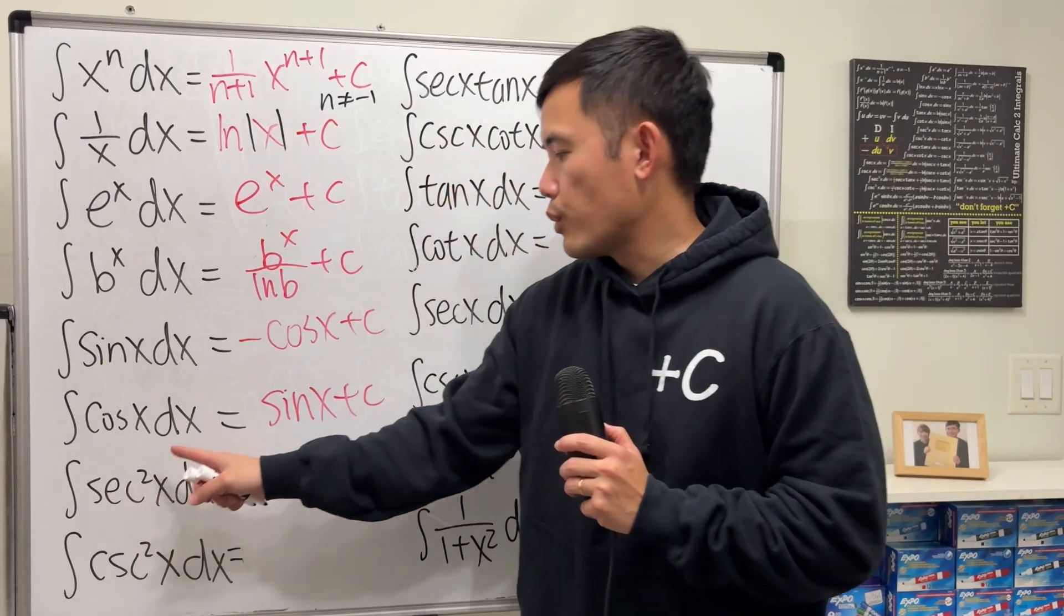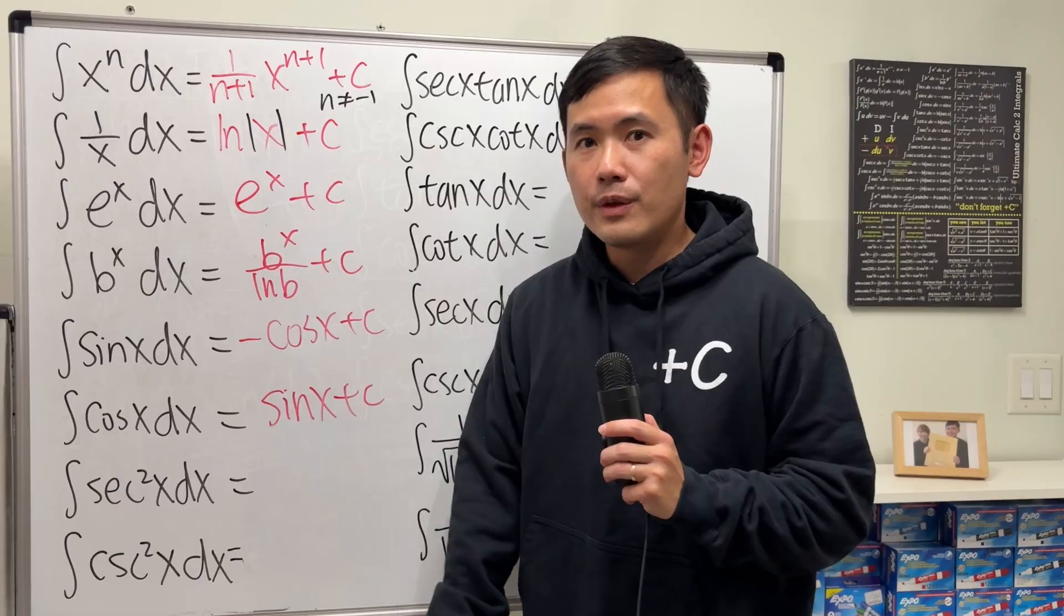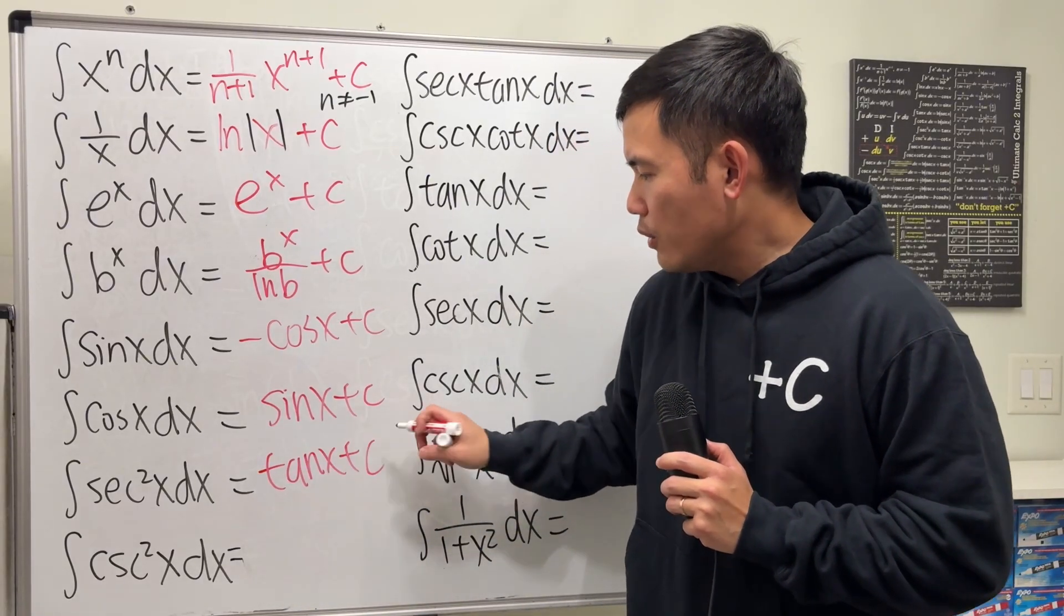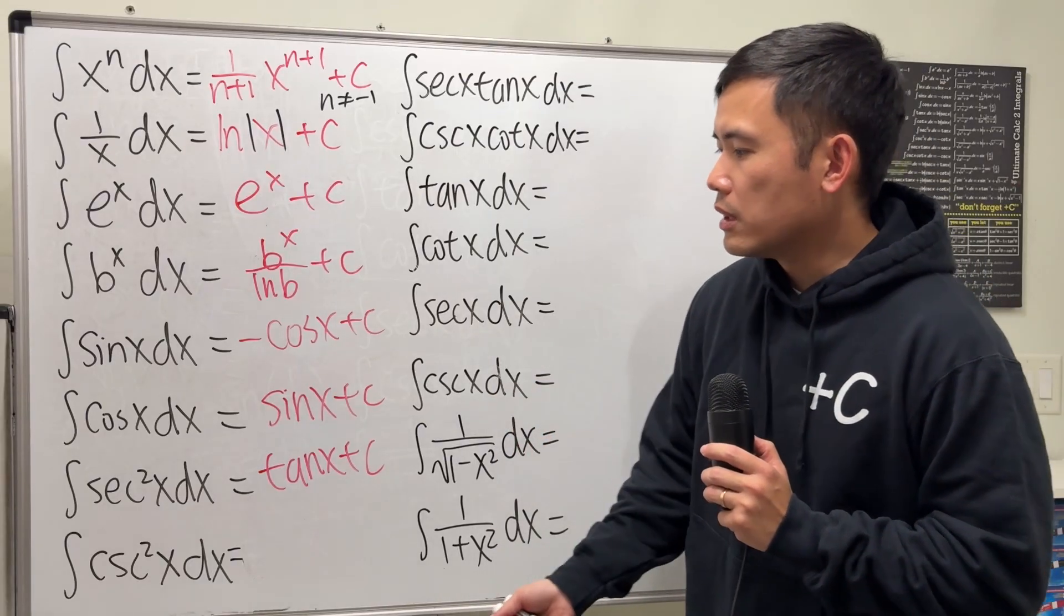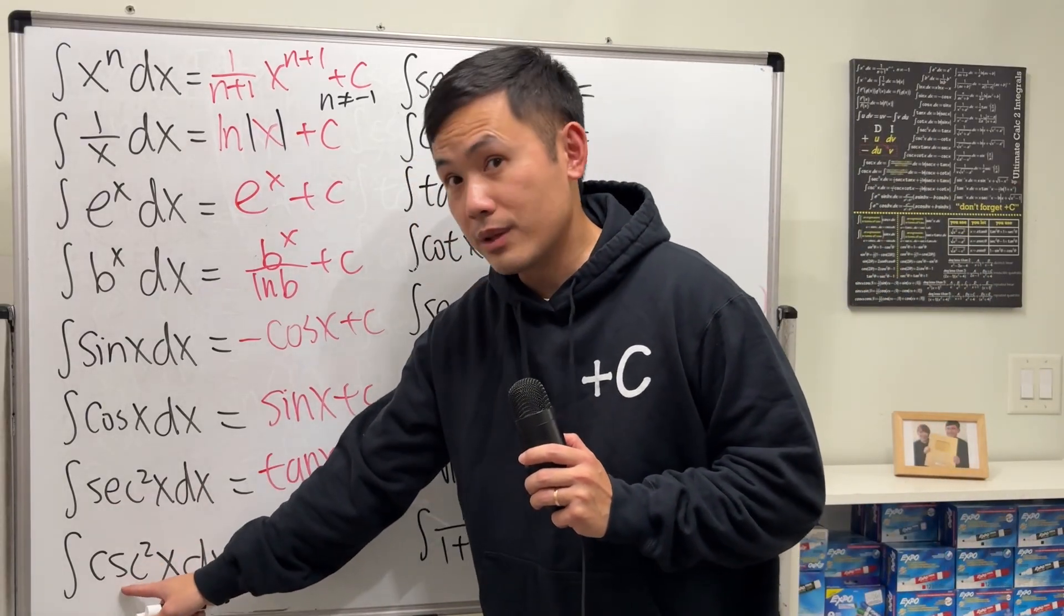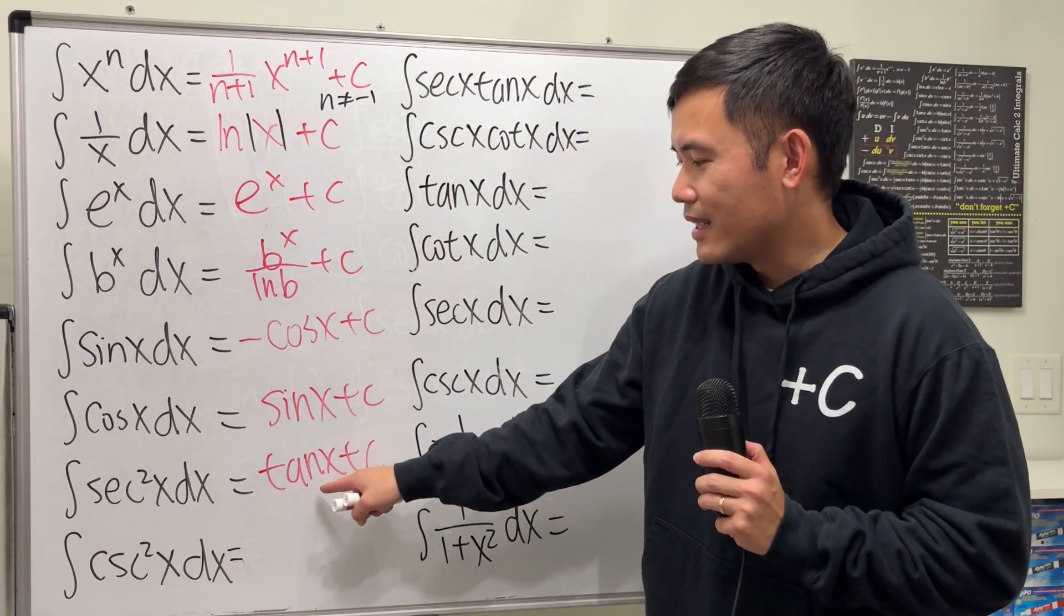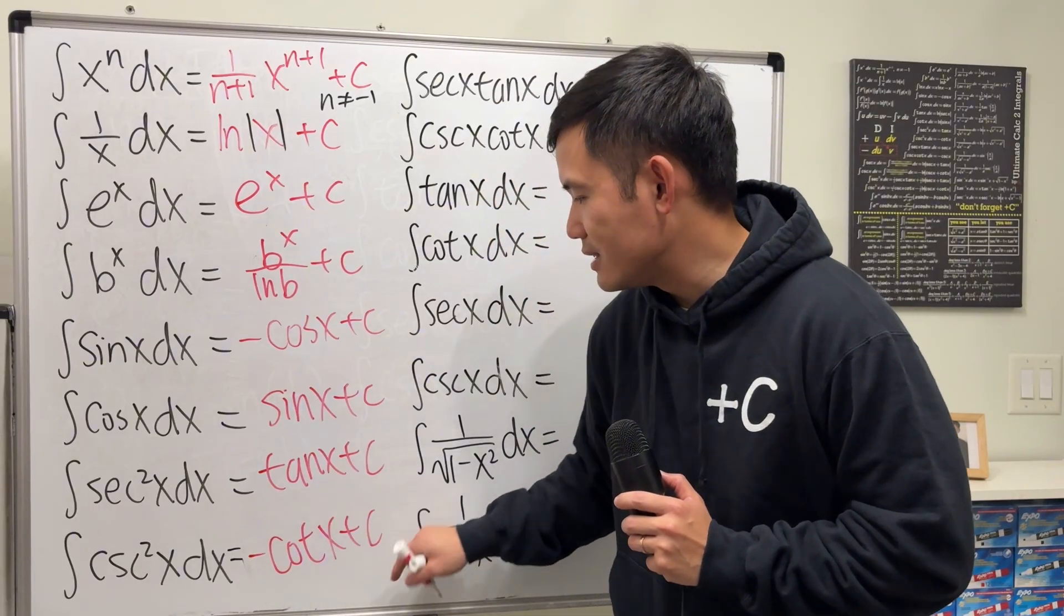Next, the integral of secant square x. The derivative of what function gives a secant square? Well, it's just tangent x. And how about what derivative of what function will give you cosecant square x? It's the co-version of that, but remember negative. Negative cotangent x plus C.